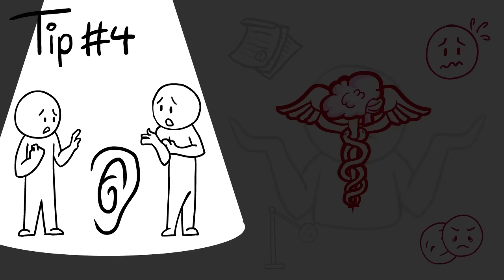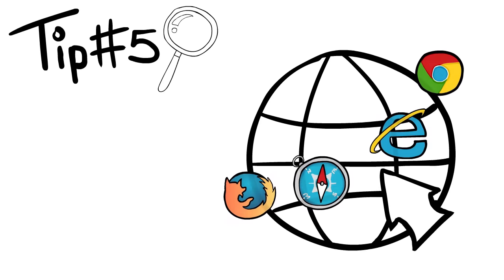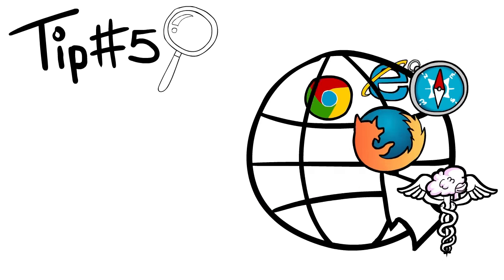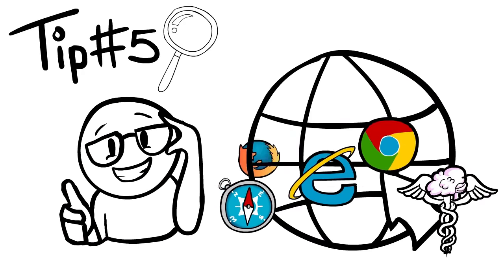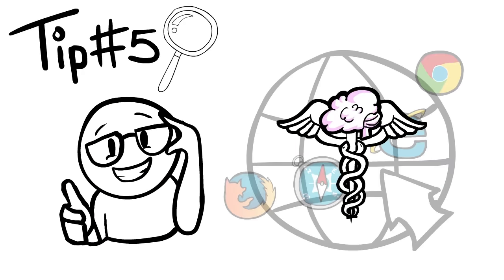And finally, tip five: do try and research their illness. The internet is a wonderful tool that allows you to research whatever illness your loved one has. You can research symptoms, helpful tips, and read others' experiences.